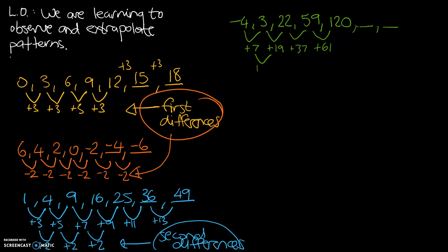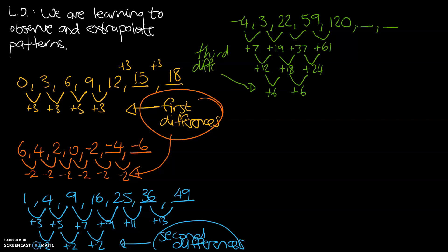How do we get from 7 to 19? We add 12. From 19 to 37, we're adding 18. So our second difference also has differences. From 37 to 61, we add 24. We've noticed differences within our second differences, so let's go one more level and look at the third differences. From 12 to 18, we add 6. And from 18 to 24, again we add 6. In our third differences, we've observed a pattern that we can extrapolate and carry on.